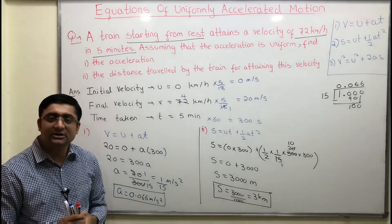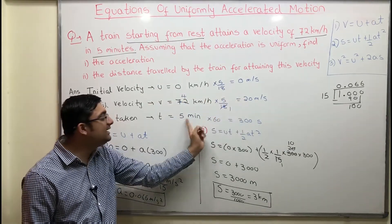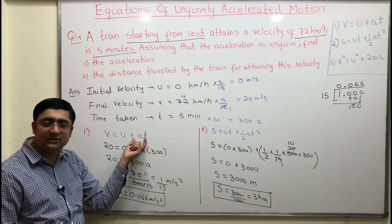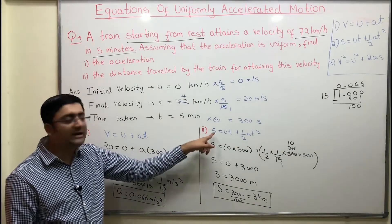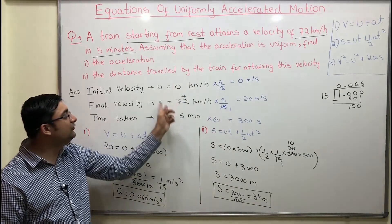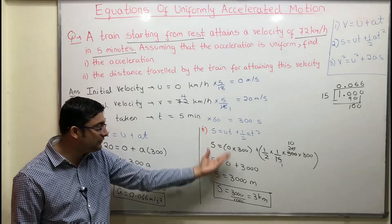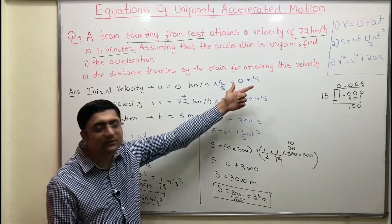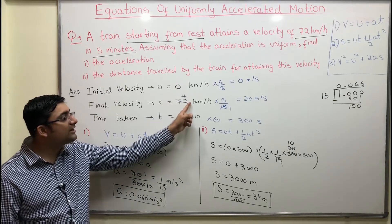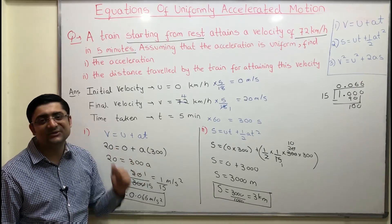This is how you solve the question. Remember: the first step is always convert u and v into meters per second and time into seconds. Then to find acceleration, use u, v, a, and t in the first equation of motion — substitute and get your answer. To find distance, use either equation 2 or equation 3 — both give the right answer. Do not forget to convert speeds and time to SI units.